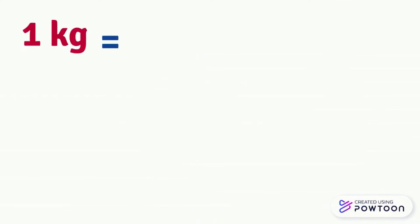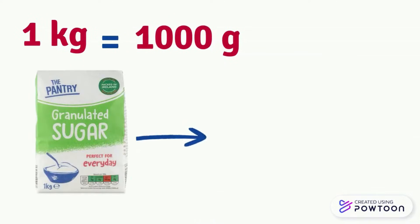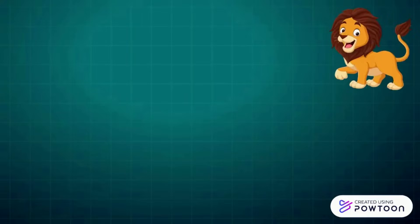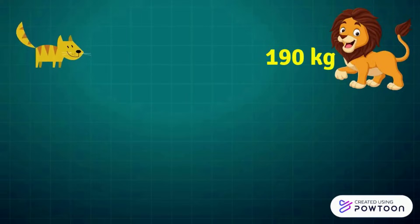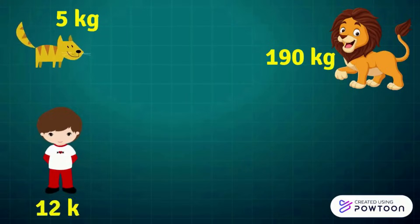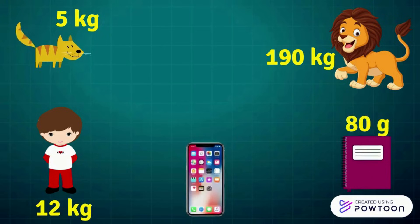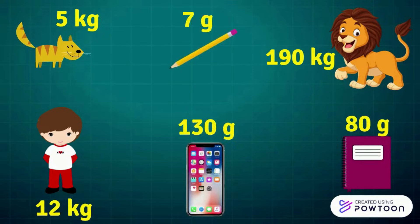Remark: one kilogram equals 1,000 grams. That is to say, one kilogram of sugar weighs 1,000 grams. Here are some examples: a lion weighs 190 kilograms, a cat weighs 5 kilograms, a 2-year-old child weighs 12 kilograms, a notebook of 100 pages weighs 80 grams, a mobile phone weighs 130 grams, and a pencil weighs 7 grams.